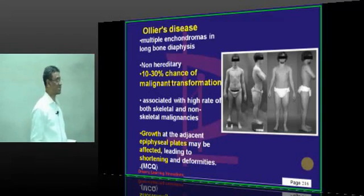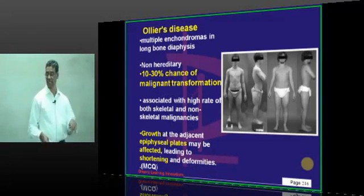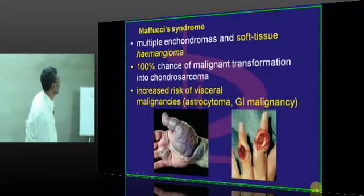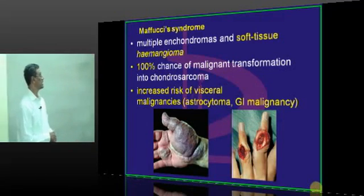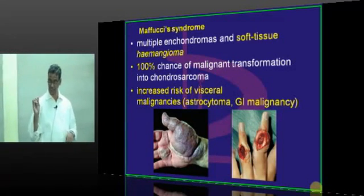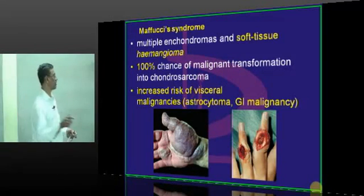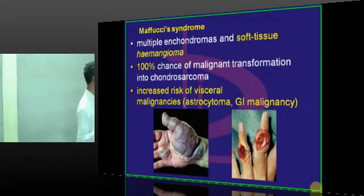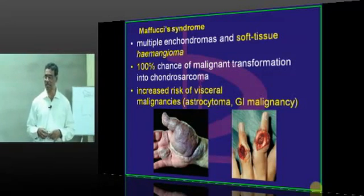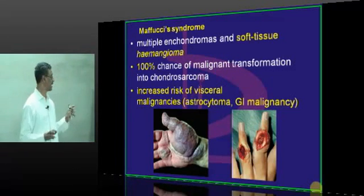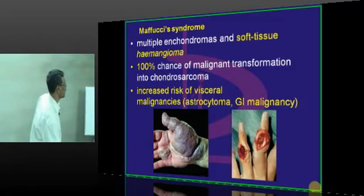Ollier's disease is associated with a high rate of both skeletal and non-skeletal malignancies, and growth at the epiphyseal plate may be affected leading to shortening and deformities. Maffucci's syndrome is multiple enchondroma with soft tissue hemangiomas, and carries a 100% chance of malignancy, with increased risk of visceral malignancies such as astrocytoma and GI malignancy.